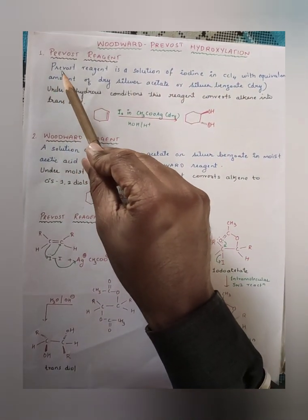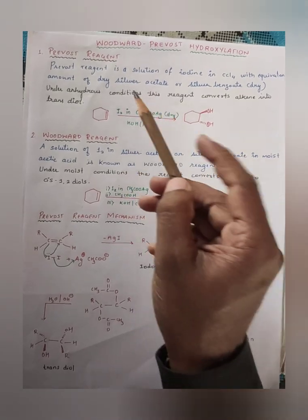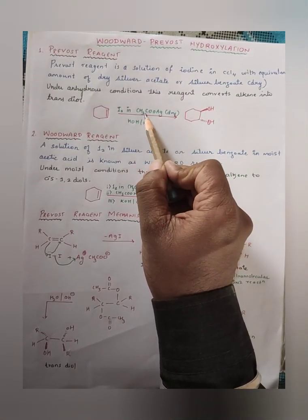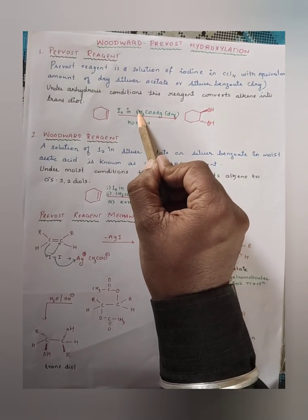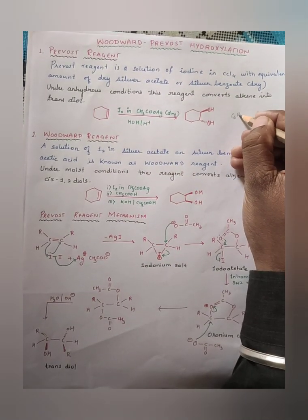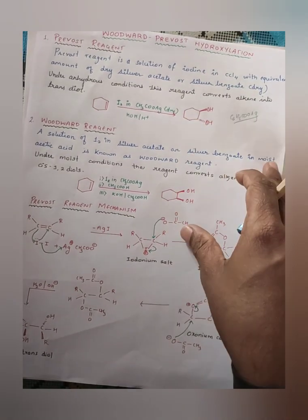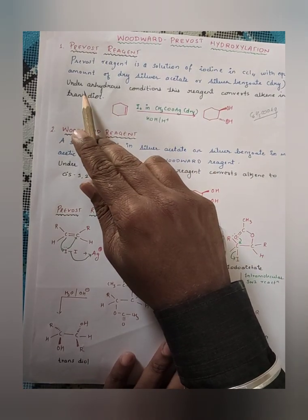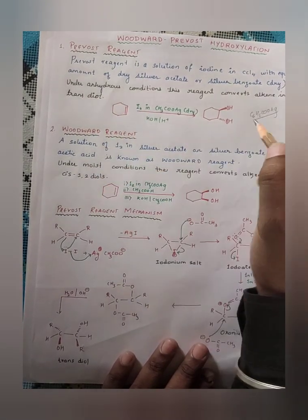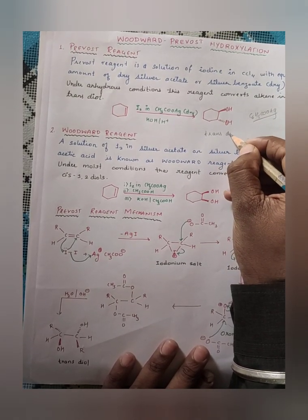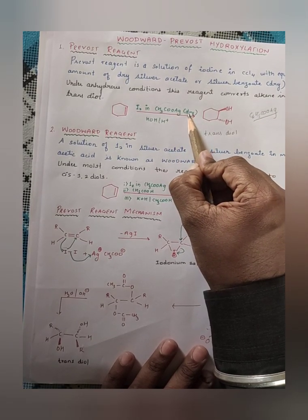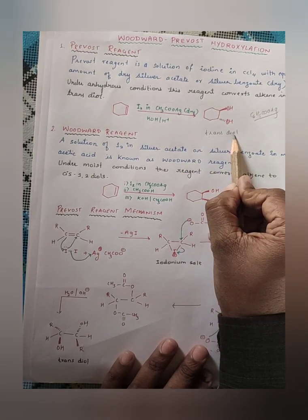What is Prevost reagent? Prevost reagent is a solution of iodine (I₂) in CCl₄ with an equivalent amount of dry silver acetate or silver benzoate (C₆H₅COOAg). The solvent used is CCl₄. In Prevost reagent, the condition that must be maintained is dry (anhydrous) conditions. The product obtained is a trans diol.